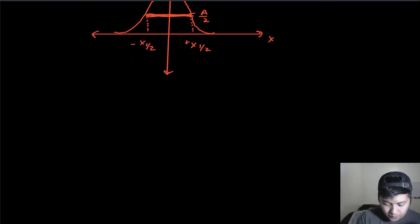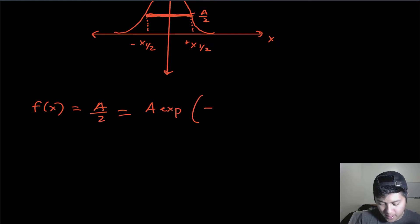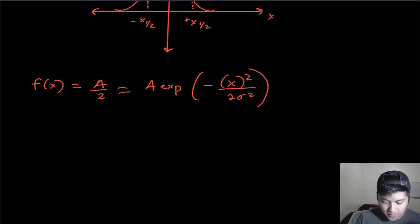So first off, I'm going to say the point where this function becomes A over 2 is equal to this, but it's going to be happening at a certain value of x. So I put down parentheses, it doesn't really matter.